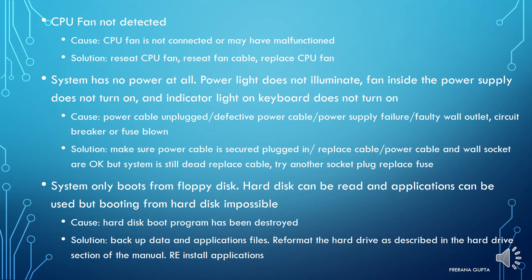If the system has no power at all — the power light does not illuminate, the fan inside the power supply does not turn on, and the indicator light on the keyboard does not turn on — the cause may be an unplugged or defective power cable, power supply failure, or a faulty wall outlet or circuit breaker. Solution: make sure the power cable is securely plugged in; replace the cable if needed. If the wall socket is okay but the system is still dead, replace the fuse or try another socket.